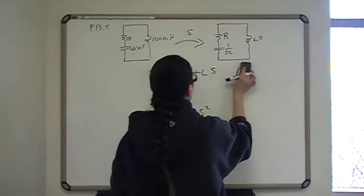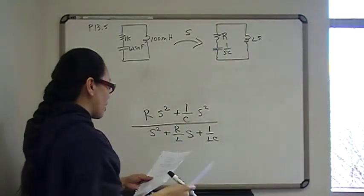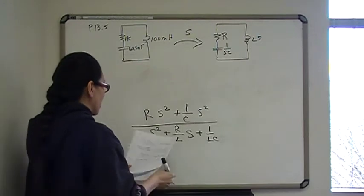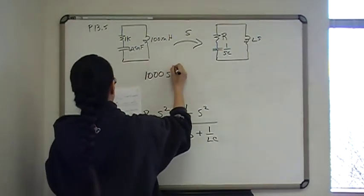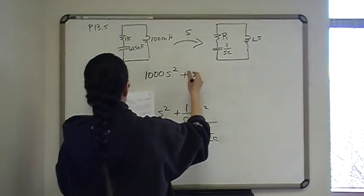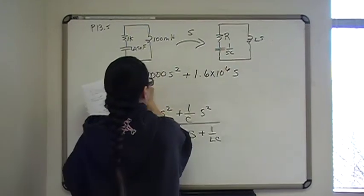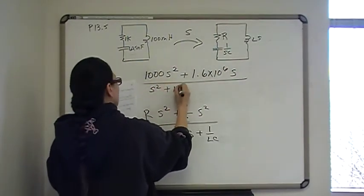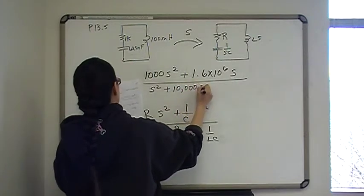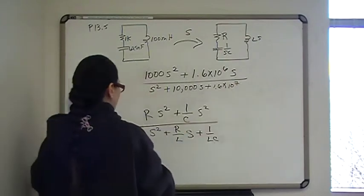Now we can plug in the numbers, and that I'm going to let you do, because I already did it, and that is just calculator work. So this will give me 1000S squared plus 1.6 times 10 to the 6 S. And then in the bottom, I have S squared plus 10,000S plus 1.6 times 10 to the 7.